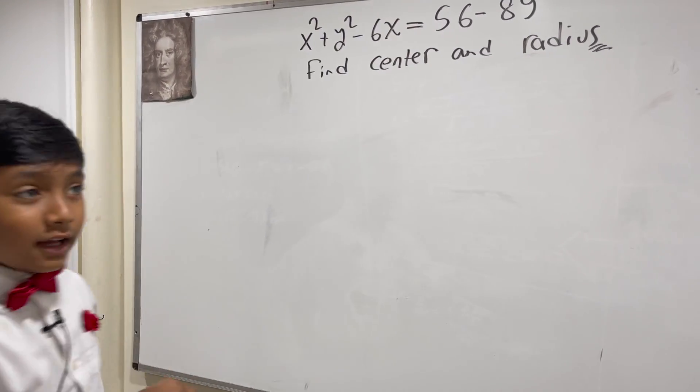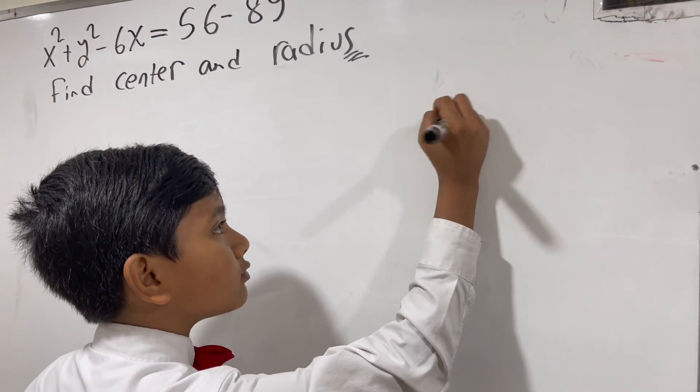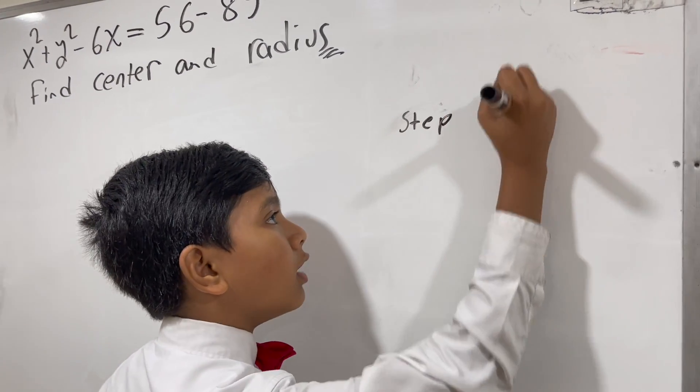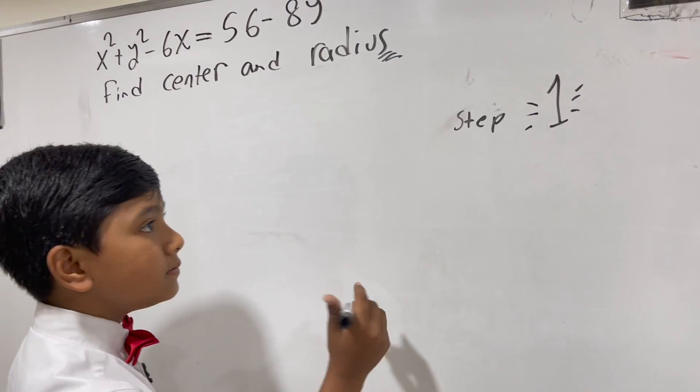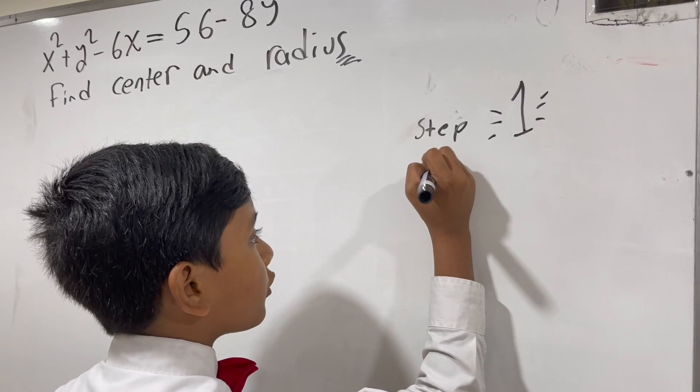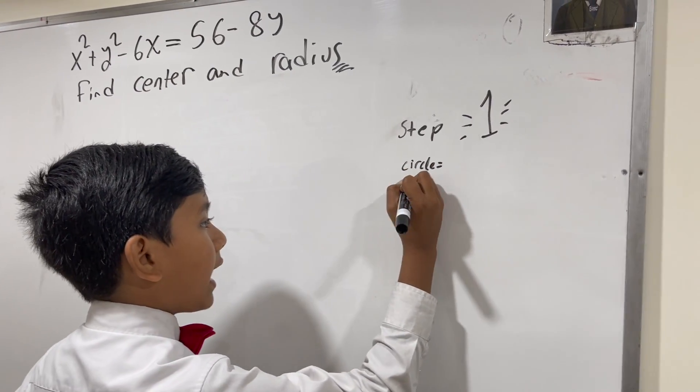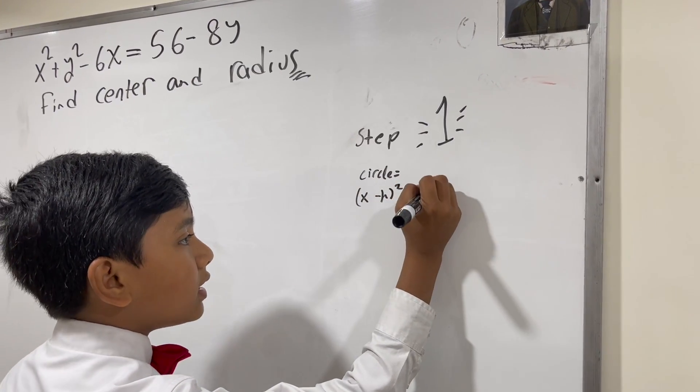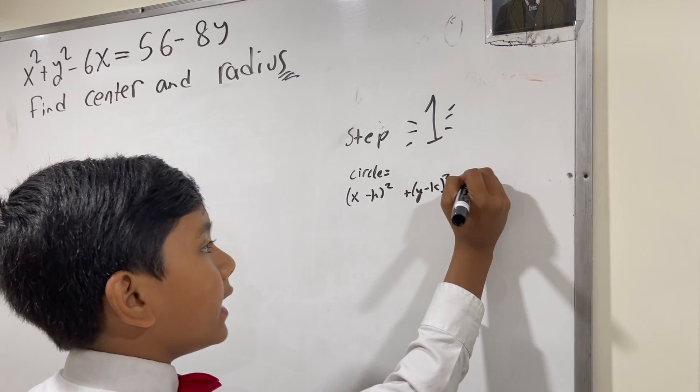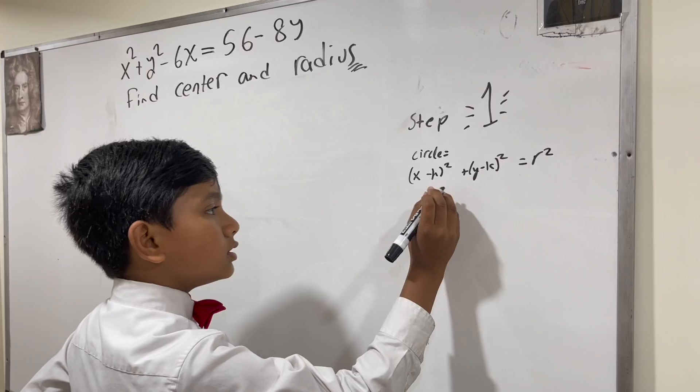Because, if you don't know, the equation... so let's write down step 1 right over here. So, the equation for a circle is X minus H squared plus Y minus K squared is equal to R squared.